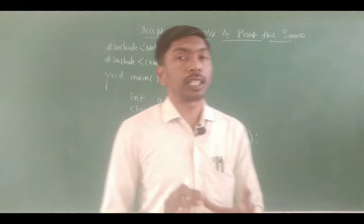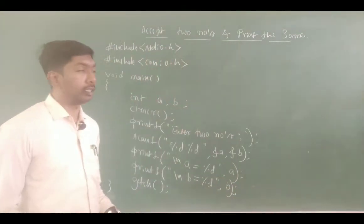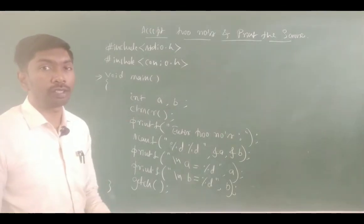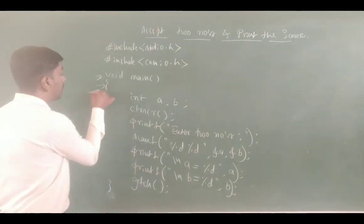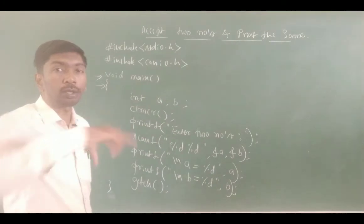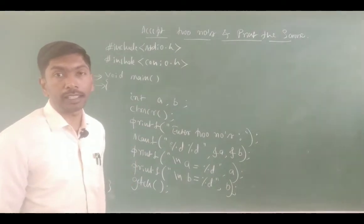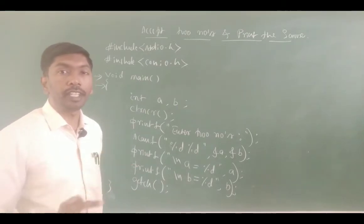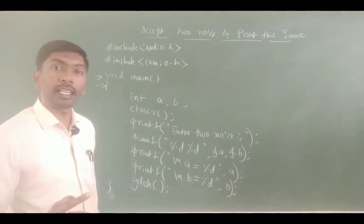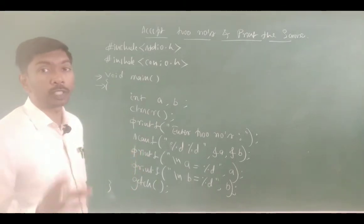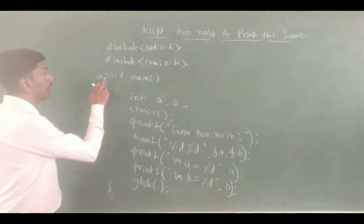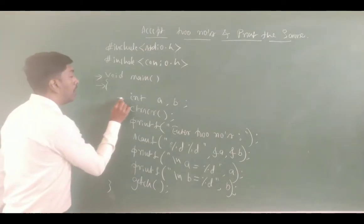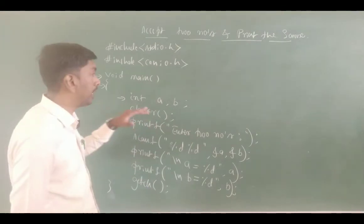Now let us trace how this program works. Execution starts from void main — it enters into the block. Press Ctrl+F9 in Turbo C++ to compile and execute. First, void main is executed and control enters the block. The first line is int a, b — this is the execution.